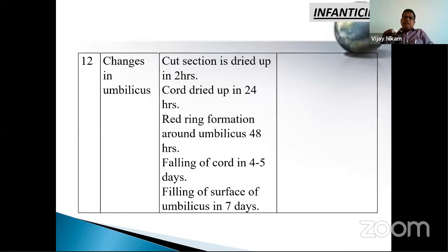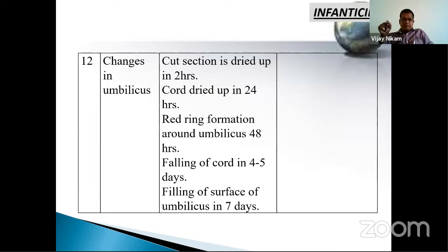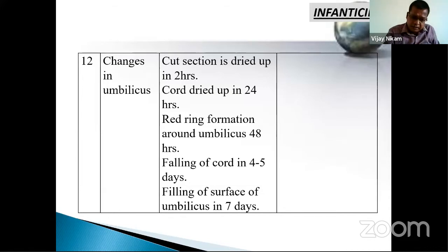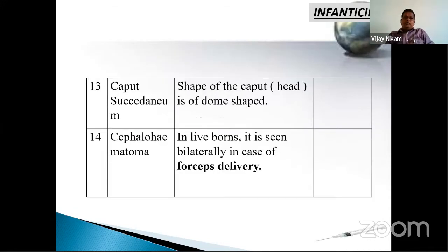Changes in the umbilicus: the cord's cut section dries up in two hours. The cord dries up within 24 hours. A red ring forms around the umbilicus within 48 hours. The cord falls off in four to five days, and the surface of the umbilicus peels within seven days. These changes can be seen in live born but not in dead born. The caput succedaneum shape is dome-shaped.